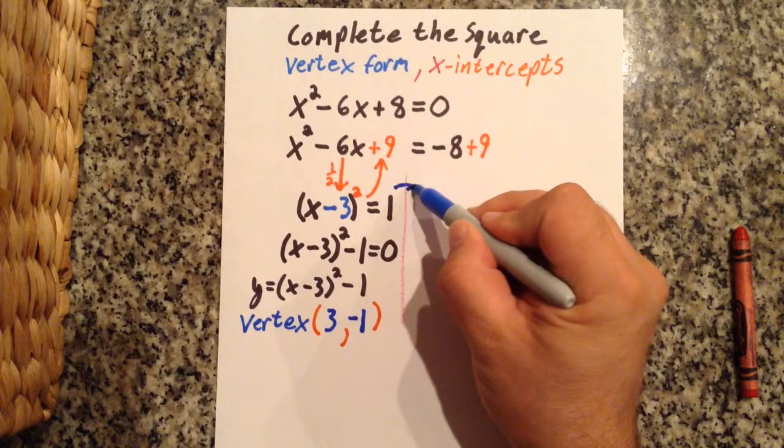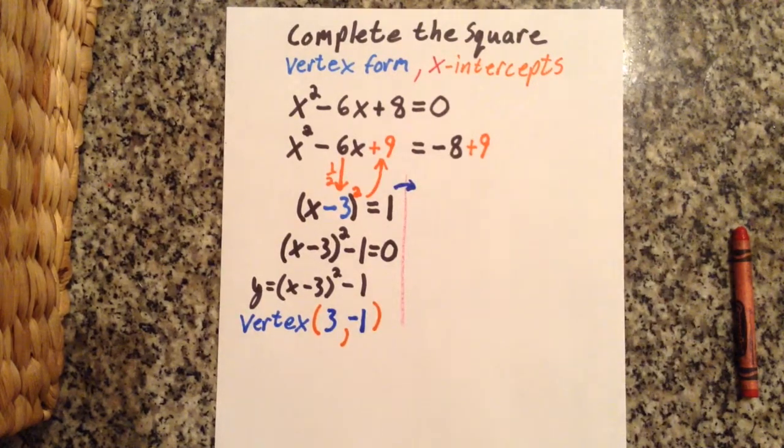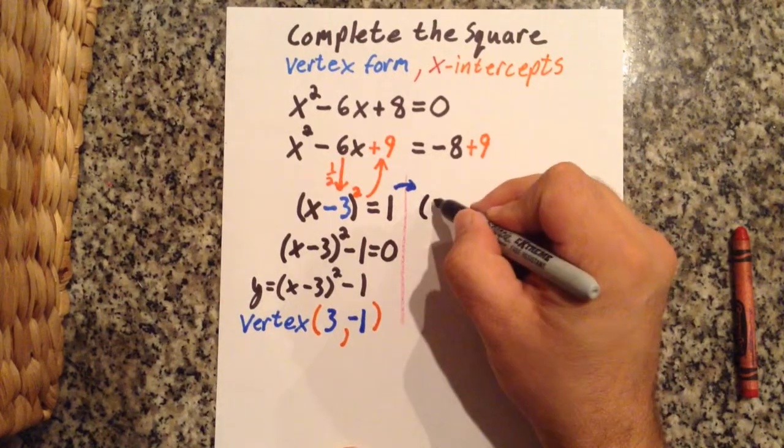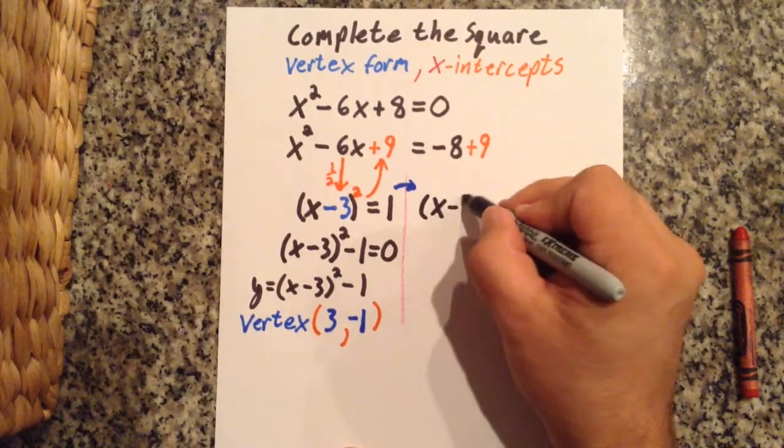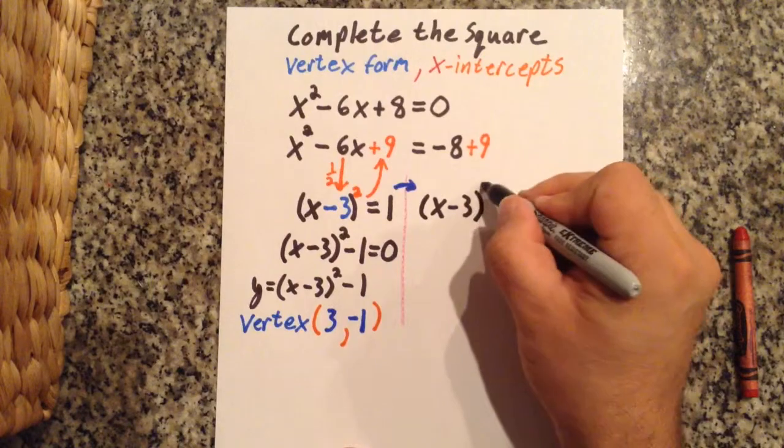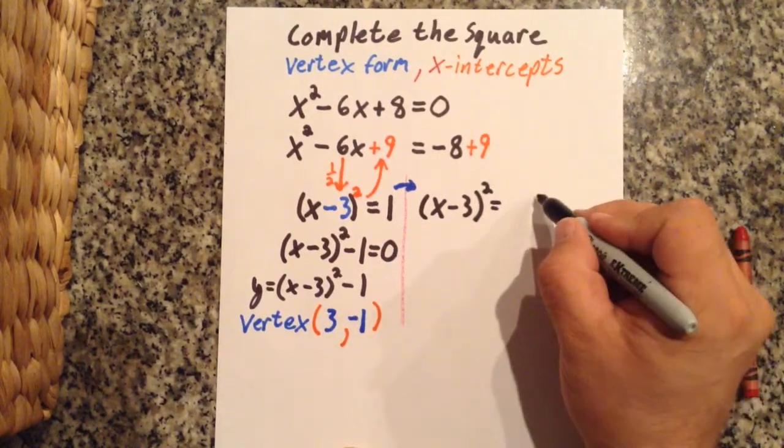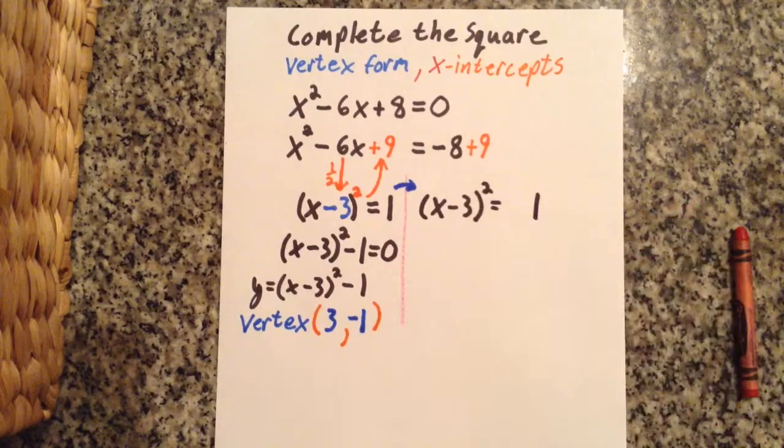Now I'm going to copy this over to the other side and find the x-intercepts. X minus 3 the quantity squared equal to 1. But to save a little space, I'm going to do a couple steps in one.